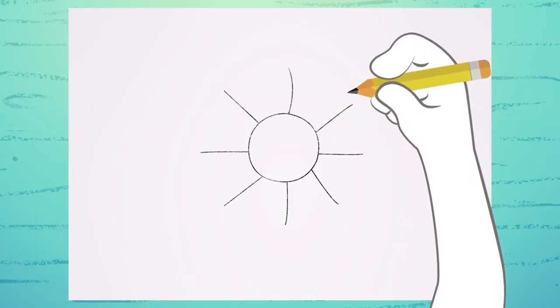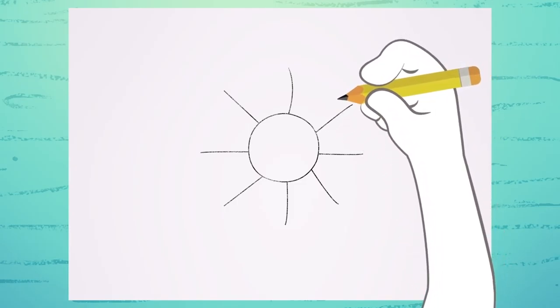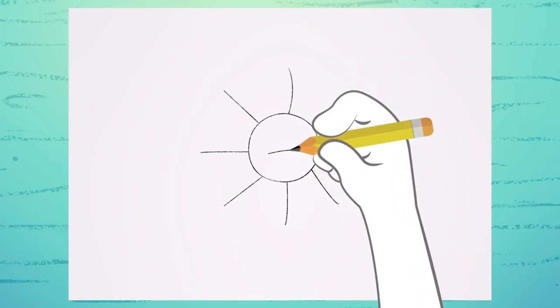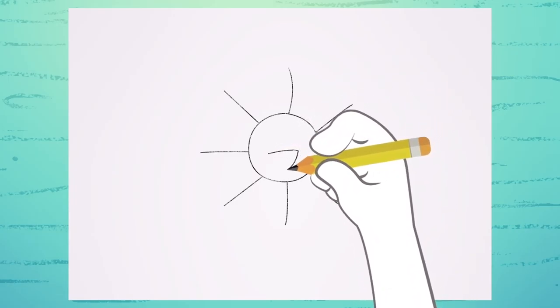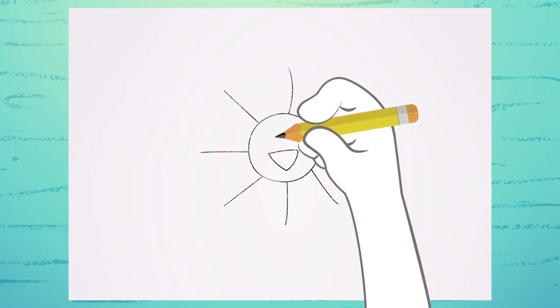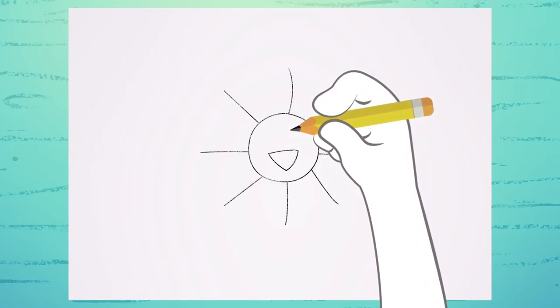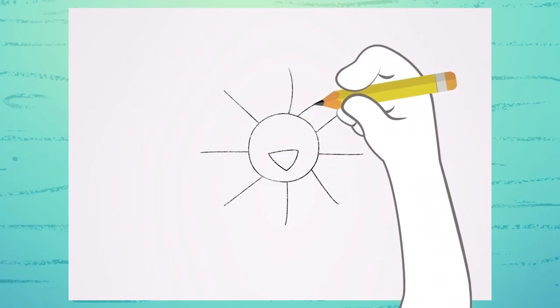Now, right in the middle of the circle, you draw an upside-down triangle. And two here, pointing up.